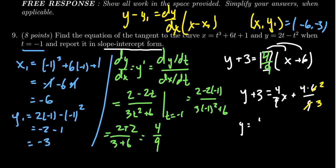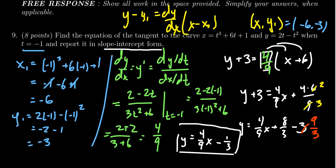So y equals 4 over 9 x plus 8 thirds minus 3. So we subtracted the 3 from both sides. Now in order to find a common denominator we should write this as 9 over 3, so negative 9 over 3. And therefore combining the fractions there you get y equals 4 ninths x minus 1 third. And so this right here gives us the equation of the tangent line written in slope intercept form.